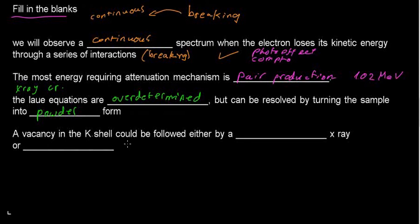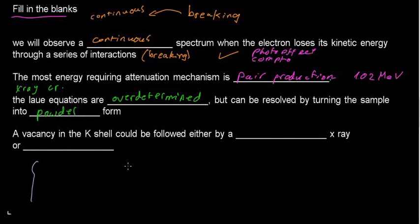Next: 'A vacancy in the K-shell could be followed by either a ___ X-ray or ___.' This is somewhat of a trick question because we know two different mechanisms that feature a K-shell vacancy. One of them is characteristic X-ray.